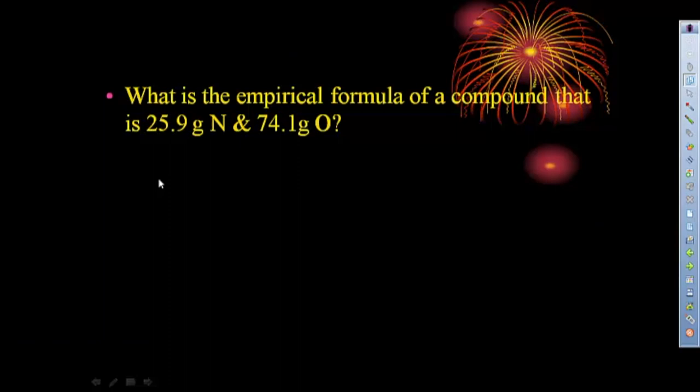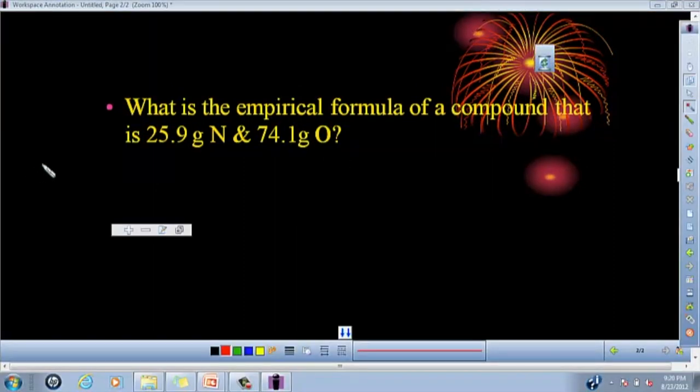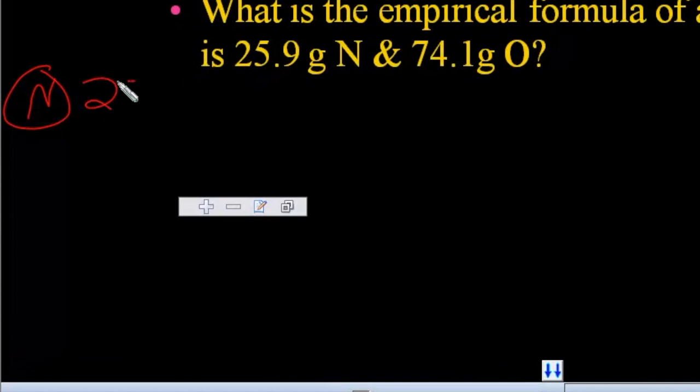So this problem, what is the empirical formula of a compound that is 25.9 grams of nitrogen and 74.1 grams of oxygen? We're going to start with our nitrogen.